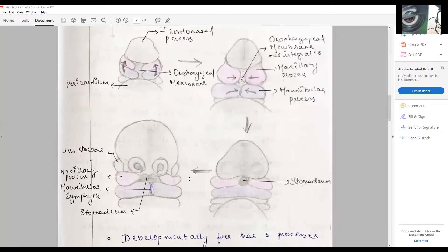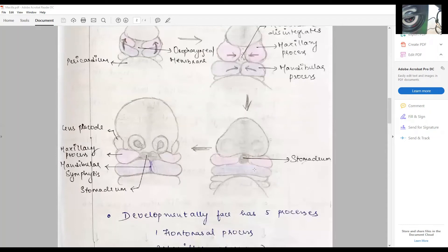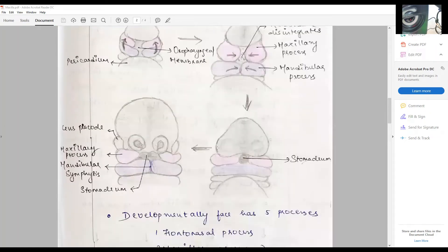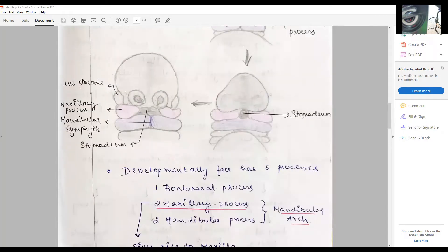This is a storyline that you need to create: the stomodeum, how the maxillary process begins to move, how the lens placode later moves—all you have to mention. The initial impact is with this diagram. Developmentally, the face develops from five processes: the frontonasal process, two maxillary processes, two mandibular processes.